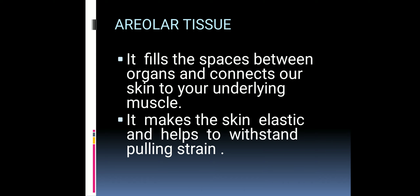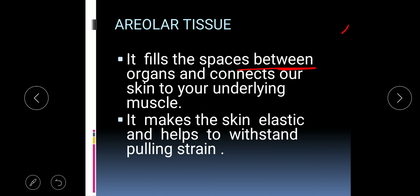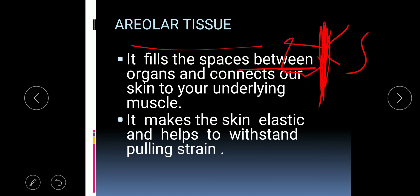First, areolar connective tissue fills the spaces between the organs and connects our skin to the underlying muscles. For example, between the stomach and liver, this space is filled by areolar tissue. It also binds the skin with the muscles beneath it.